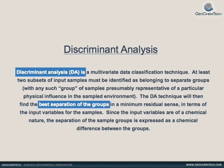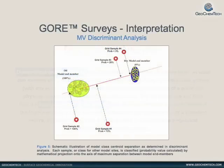The second method of interpreting the data set is called discriminant analysis. By modeling the two wells that represent the dry and productive end members of the exploration target, the separation of the groups is used to define the chemical difference.